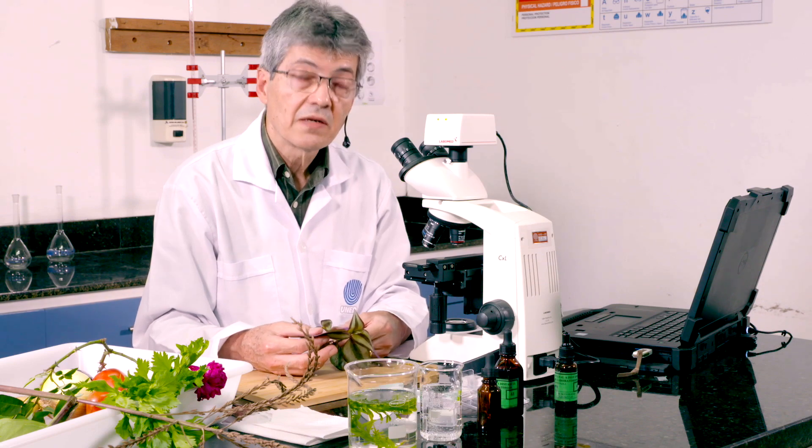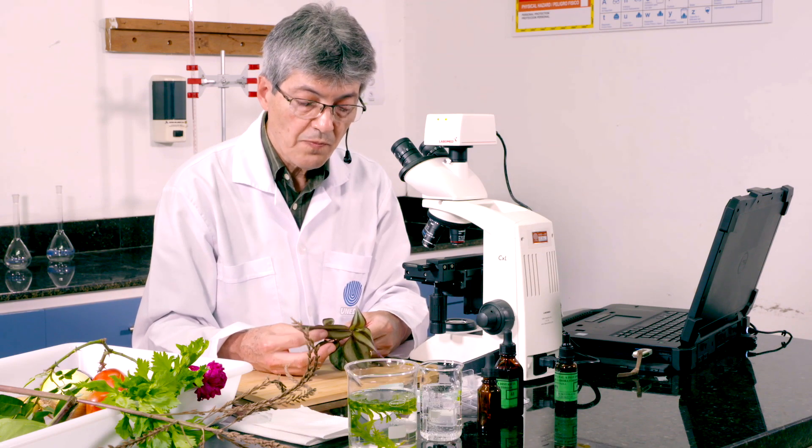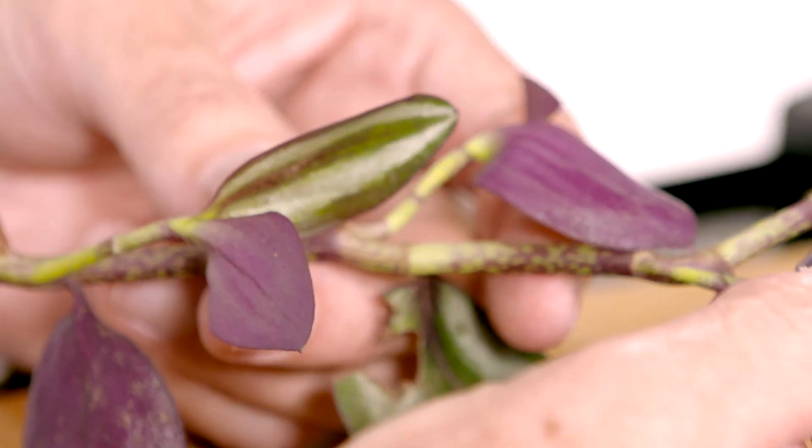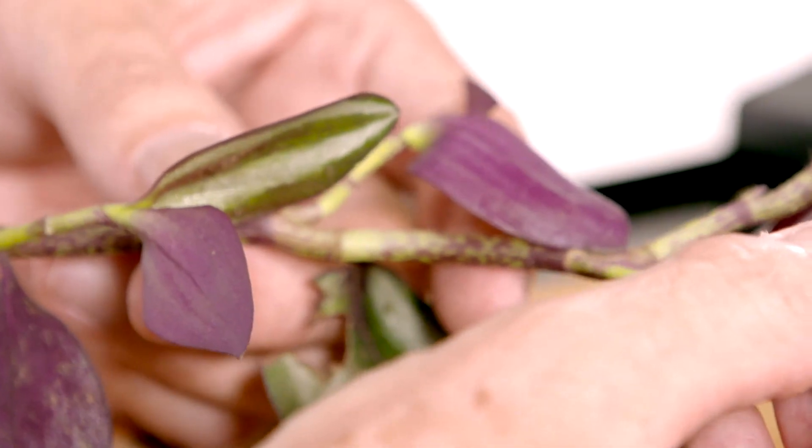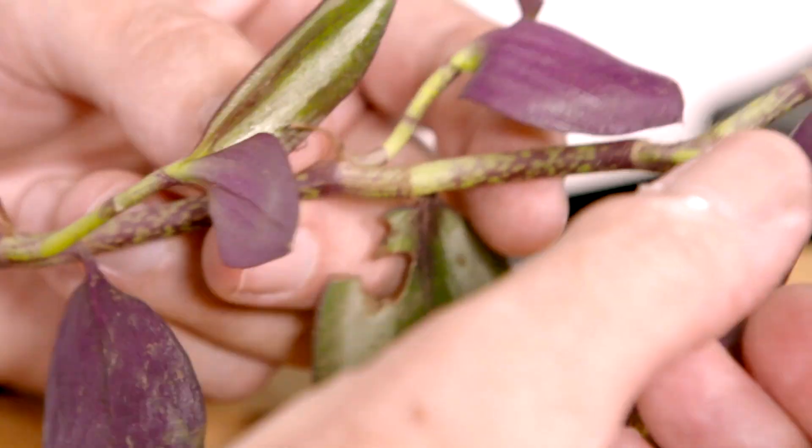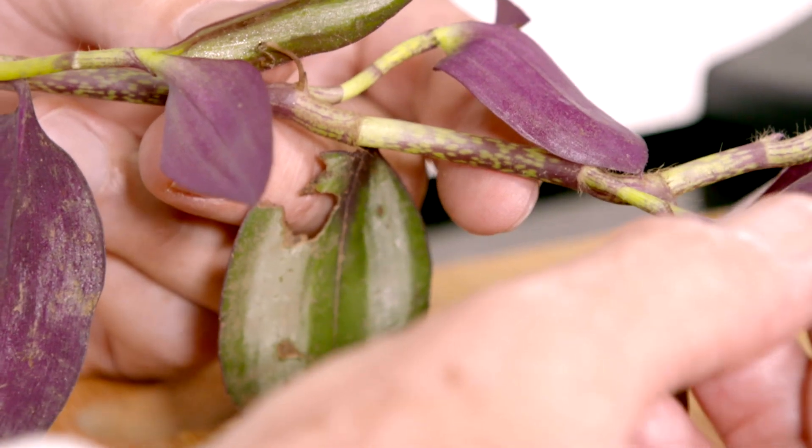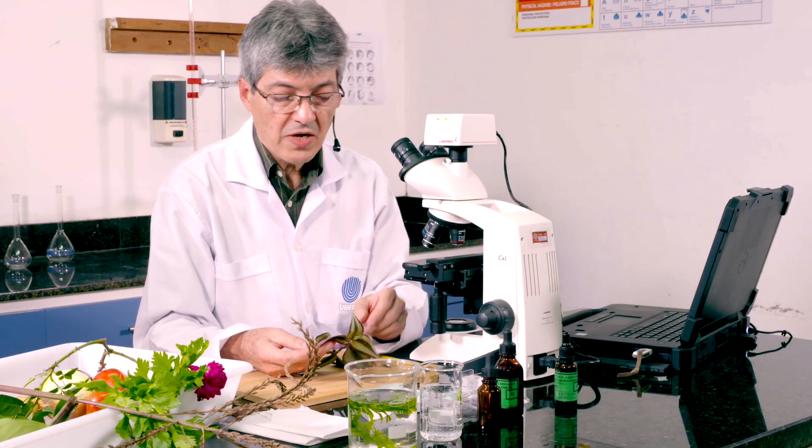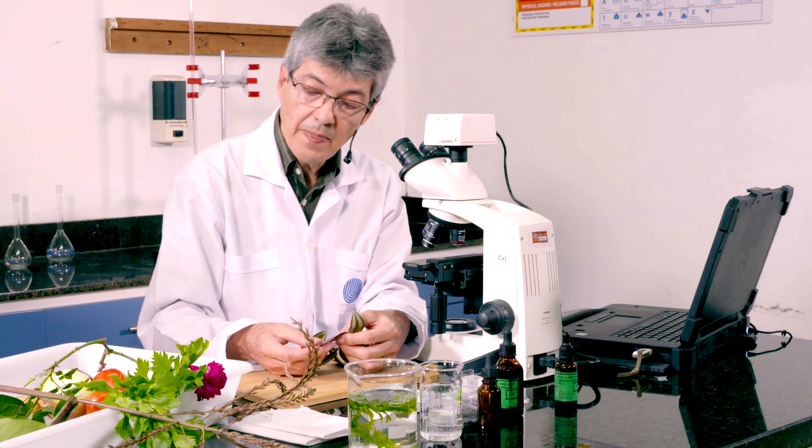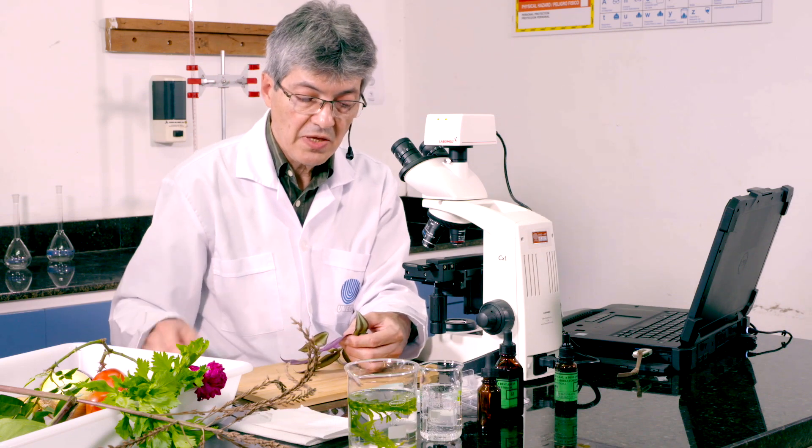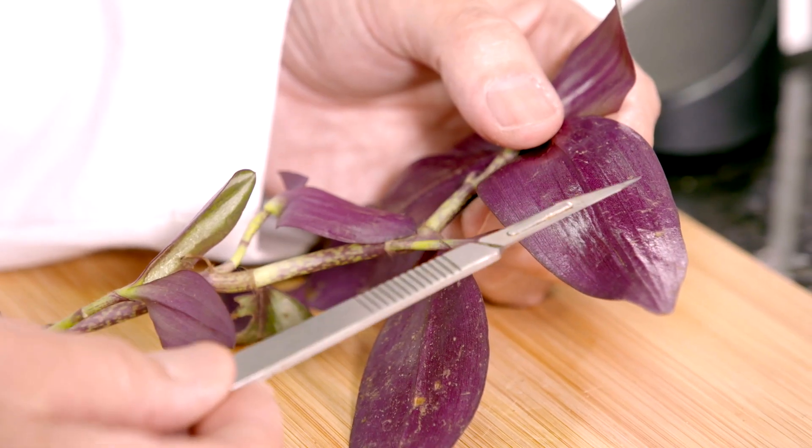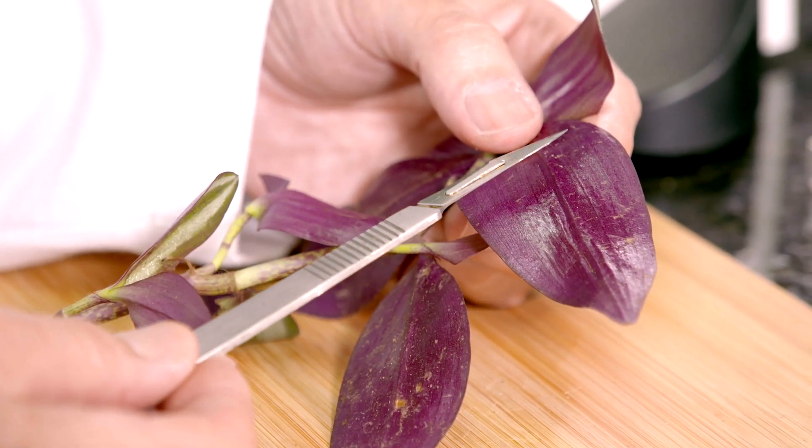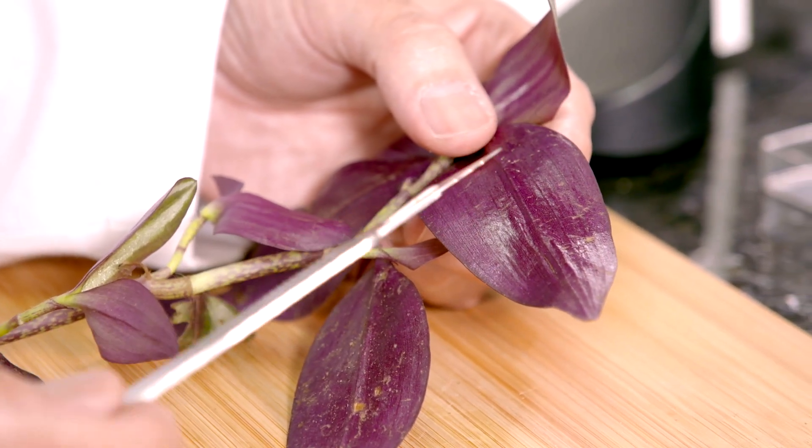We observe the epidermis making a paradermal cut in a plant like this, which is called cucaracha, which is of the type of zebrina. We take a small sample of epidermis, making a corte paradermal.